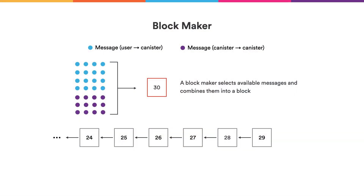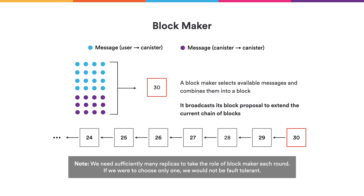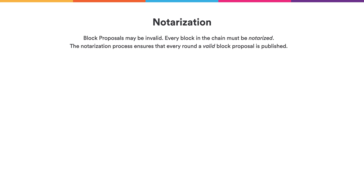A replica on the subnet can serve as the block maker. It will have some messages available that should be processed by the canisters that run on this subnet, with a blockchain up to a certain height, say 29. It gathers messages waiting to be processed, groups them into a block, and proposes an extension to the blockchain by sending it on the gossip network to the other replicas. We cannot elect one single block maker because that block maker might be malicious, violating our liveness goal. We therefore have many replicas serving as block makers in every round.